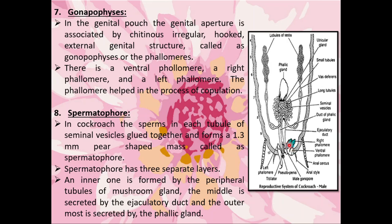There are three phallomeres: one ventral phallomere, one right phallomere, and one left phallomere. In the diagram, the left phallomere is the long structure, and hooks are present on the ventral phallomere and right phallomere as well. These three phallomeres are the external genital organs which help in copulation.